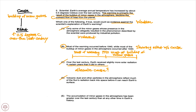E: the accumulation of minor gases in the atmosphere has been greater over the last century than at any other time in Earth's history. E actually strengthens this argument by showing that this cause has been most pronounced in the past century than at any other time in Earth's history — so it clearly strengthens the argument. But we are trying to weaken, so E would be eliminated. Remember that C was not an alternate cause — it's a trap answer choice. B is again the correct answer because it shows effect without cause.